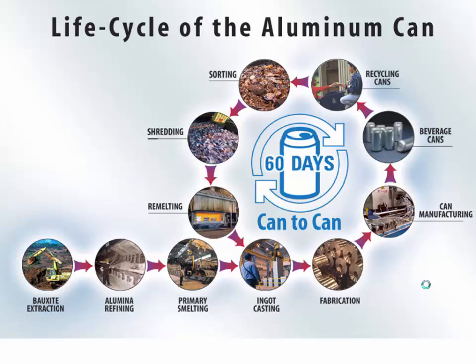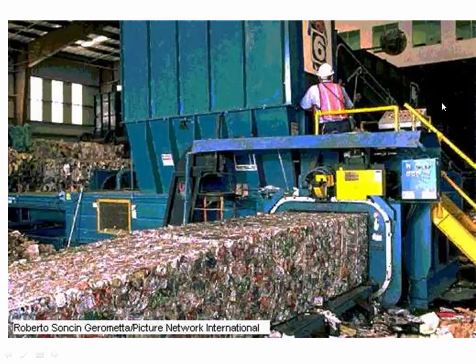It will get sorted, shredded, and remelted, and they can make it right back into a can. This is a perfect closed-loop recycling system, and it takes only about 60 days — a very efficient system. In about two months you can make a can, put it on the shelf, use it, recycle it, and make it back into a can — from shelf to shelf in about 60 days. Pretty amazing stuff. Here's a picture of cans coming out of the compactor, ready to be shipped off to reprocessing and made into a new product.